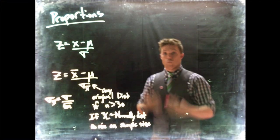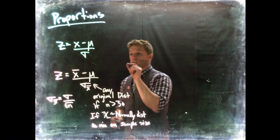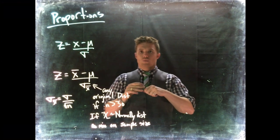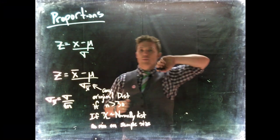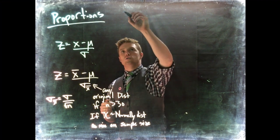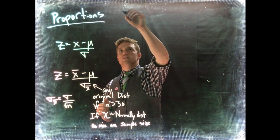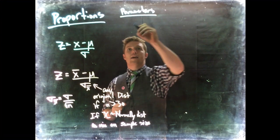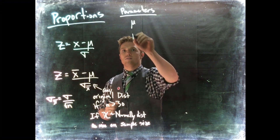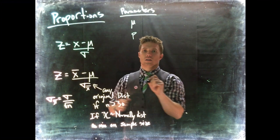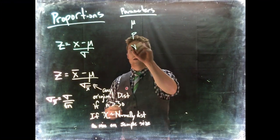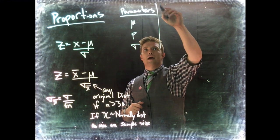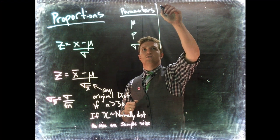We're going to take it one step further and adjust this equation yet again. Let's do a quick review of our estimators. We've got parameters: mu which is the mean, P which is the population proportion, and sigma.